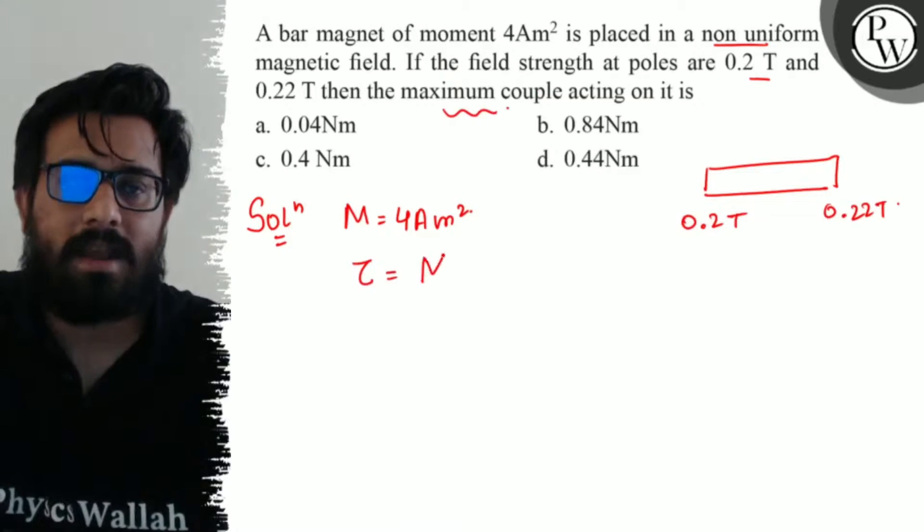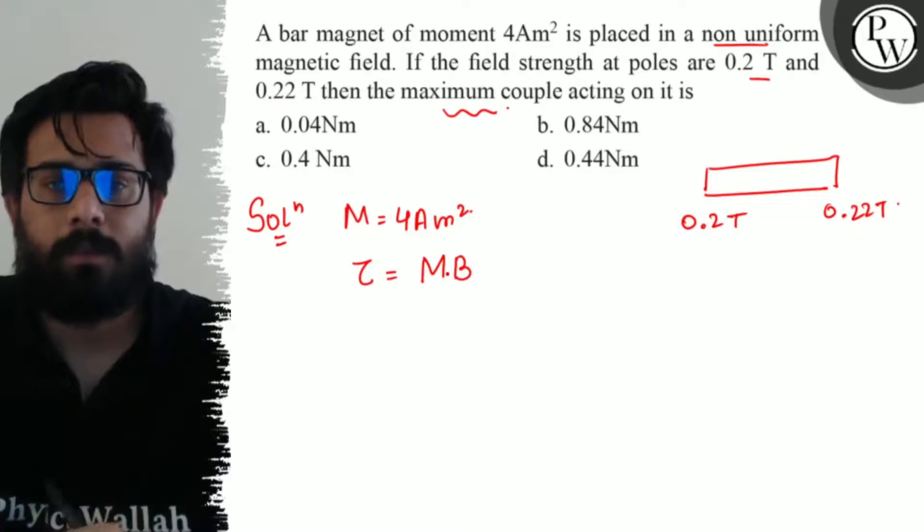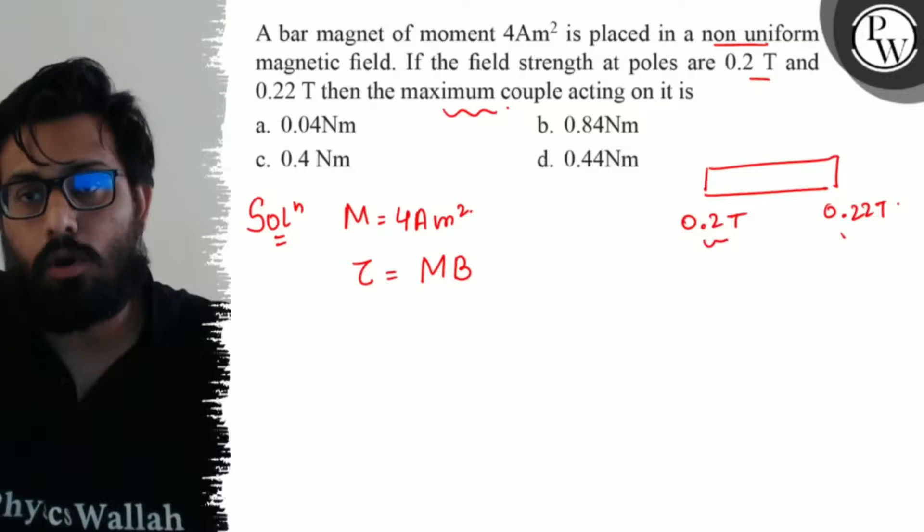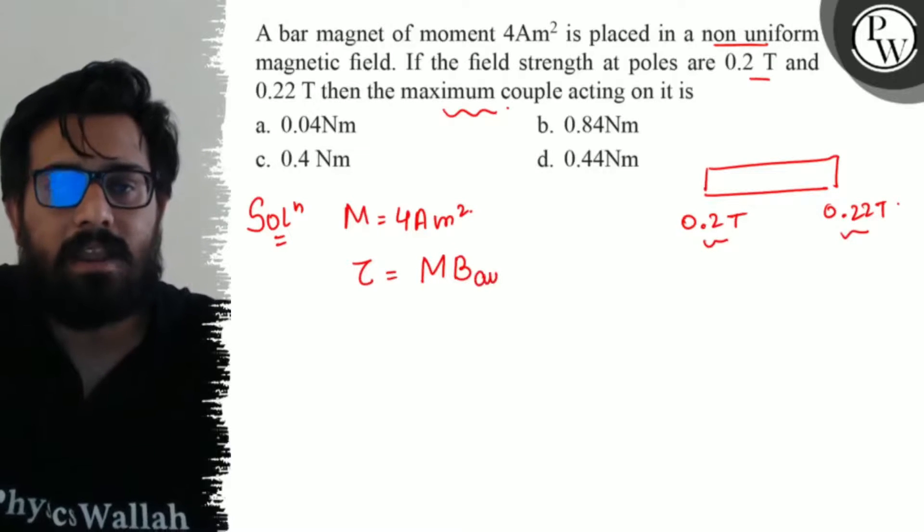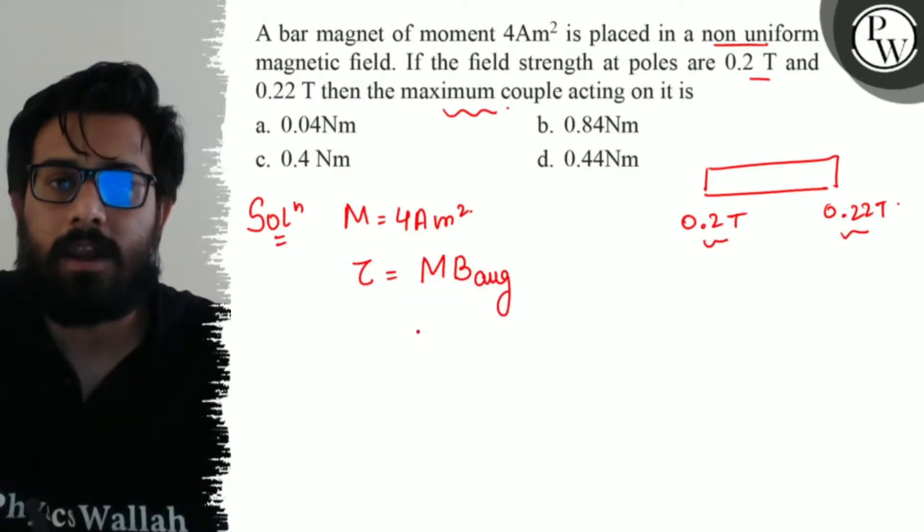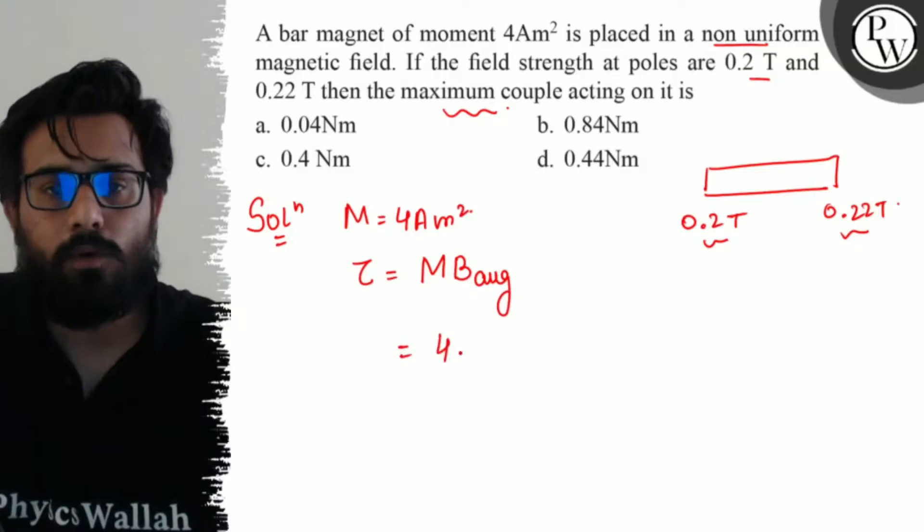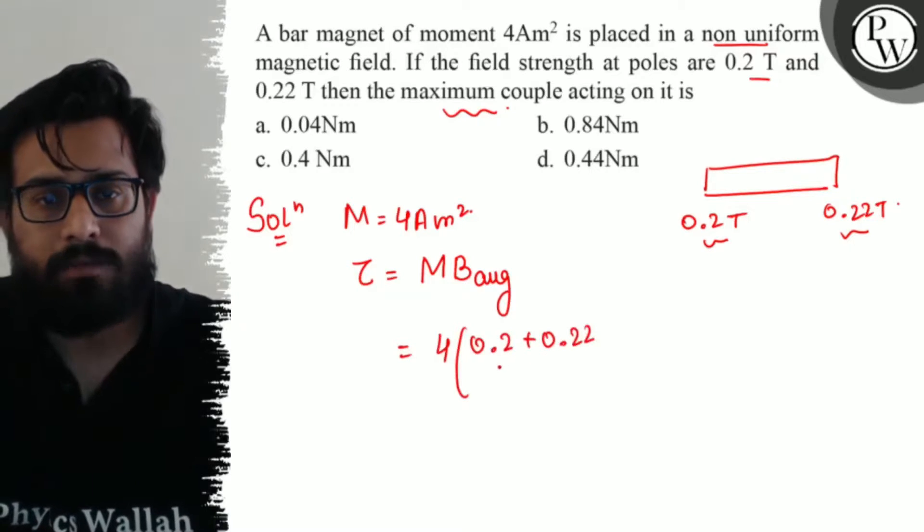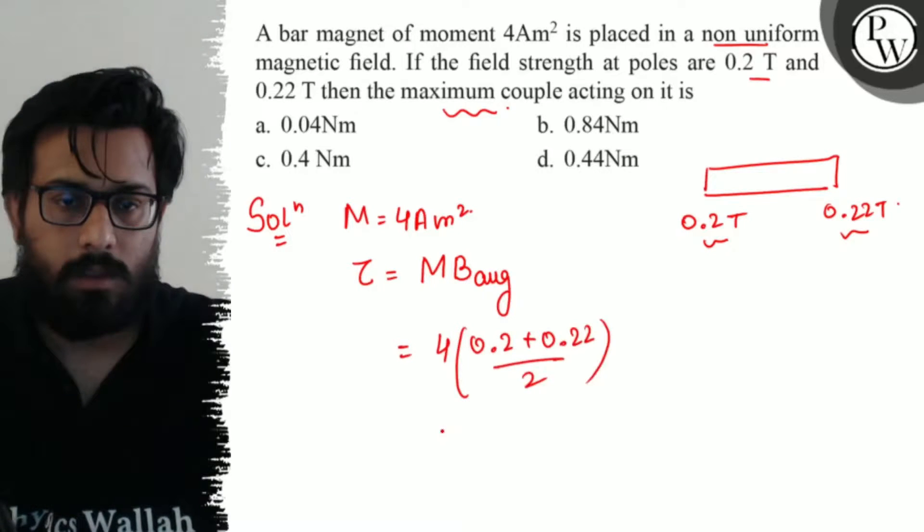Maximum torque is M × B. But since you have a non-uniform magnetic field, in that case you will calculate the B average. The value for B average is (0.2 + 0.22) divided by 2.